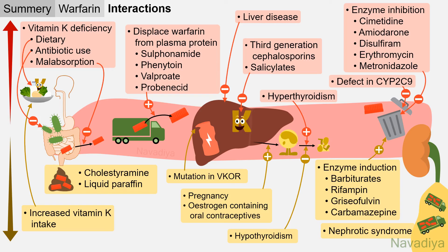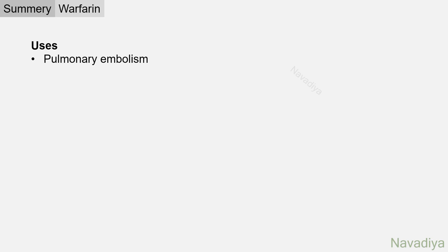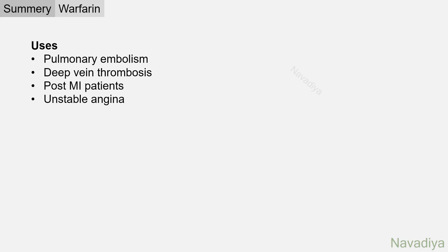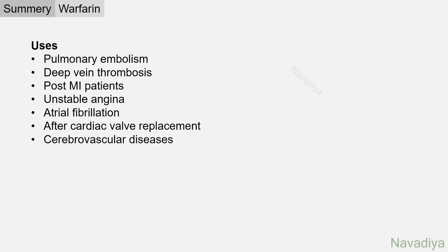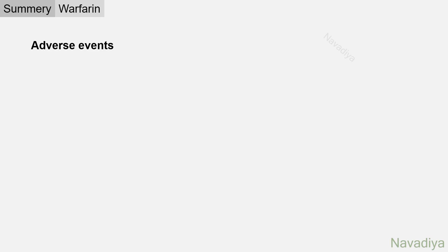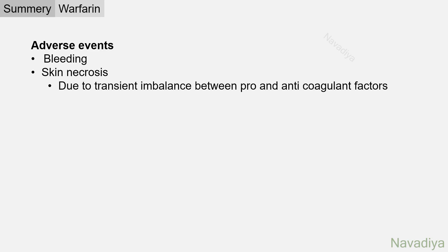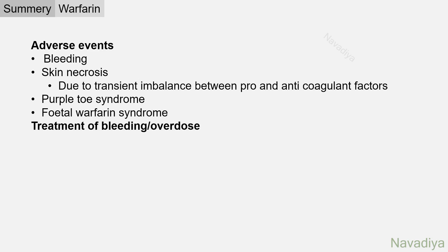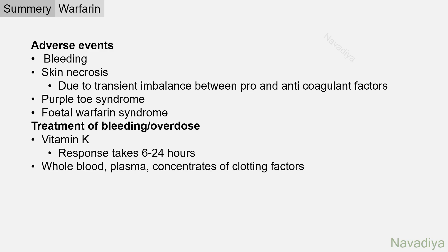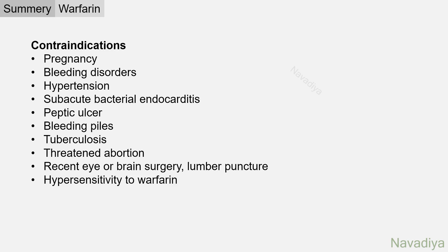Warfarin should be used cautiously in these situations. Its uses include pulmonary embolism, deep vein thrombosis, post-MI, unstable angina, atrial fibrillation, after cardiac valve replacement, and cerebrovascular diseases. Monitoring is done with INR, maintained at 2 to 3. Adverse events include bleeding, skin necrosis due to transient imbalance between pro- and anticoagulant factors, purple toe syndrome, and fetal warfarin syndrome. Bleeding can be treated with vitamin K — response takes 6 to 24 hours — or with whole blood, plasma, or clotting factor concentrates for immediate response. Contraindications include pregnancy, bleeding disorders, hypertension, subacute bacterial endocarditis, peptic ulcer, bleeding piles, tuberculosis, threatened abortion, recent eye or brain surgery, lumbar puncture, and hypersensitivity to warfarin.